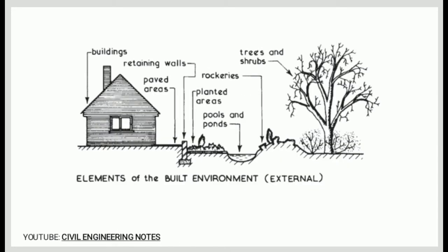From this illustration, we can see some of the examples of the elements of the built environment or external: buildings, retaining walls, paved areas, rockeries, planted areas, pools and ponds, and trees and shrubs.